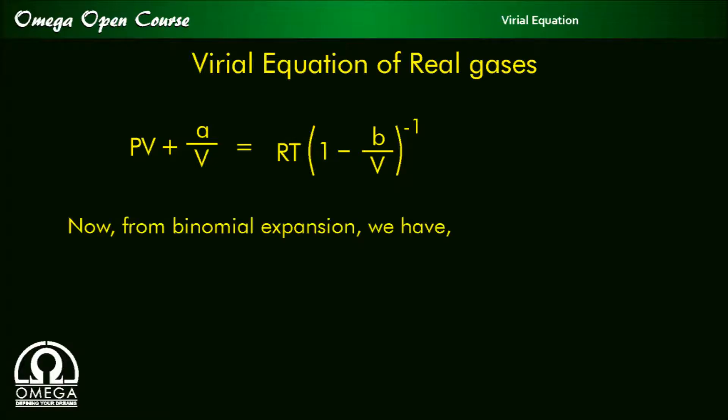Now from binomial expansion, we have 1 minus x to the power minus 1 is equal to 1 plus x plus x square up to infinity.